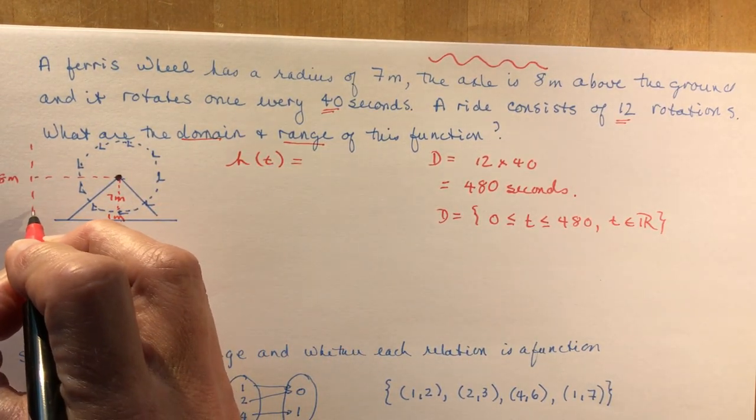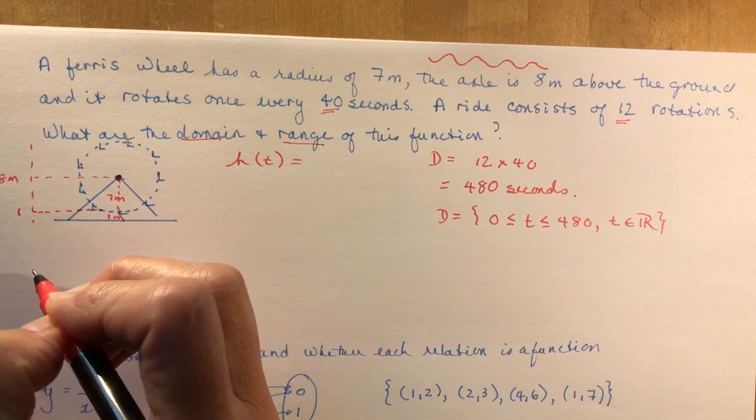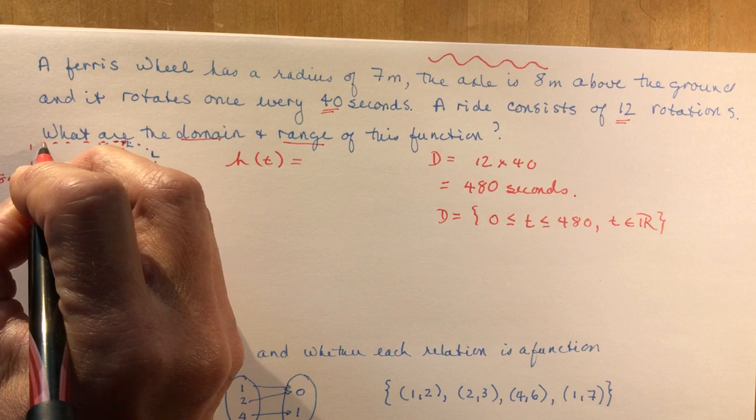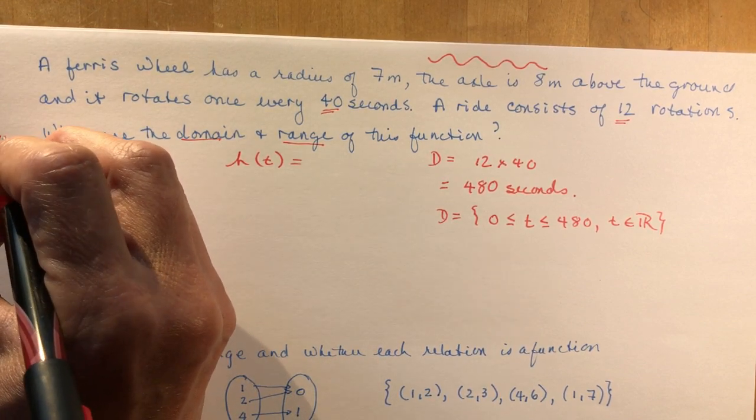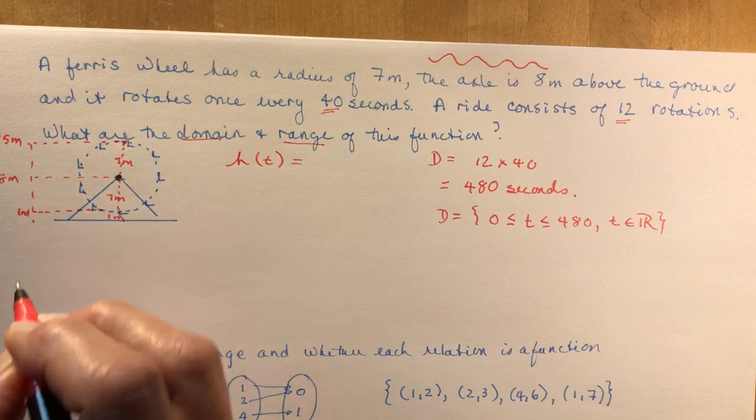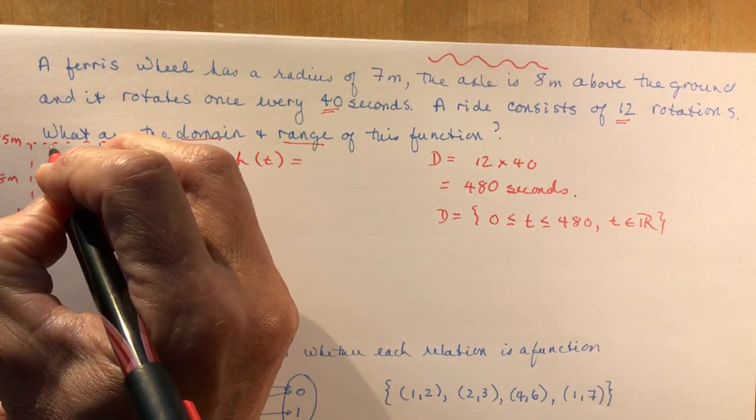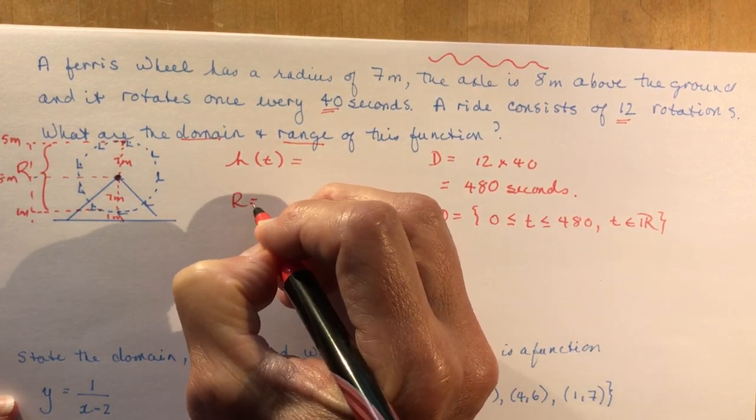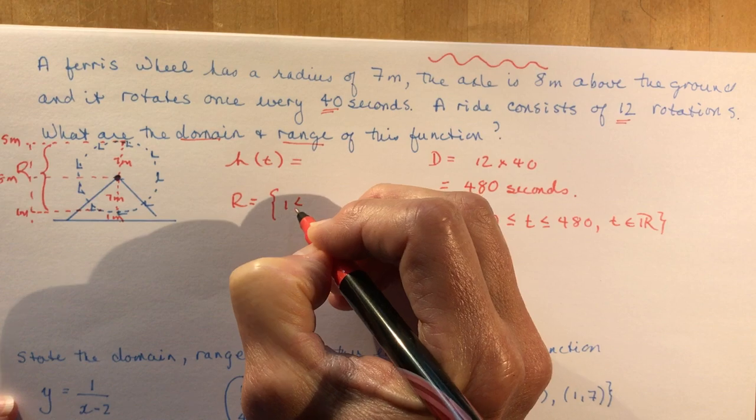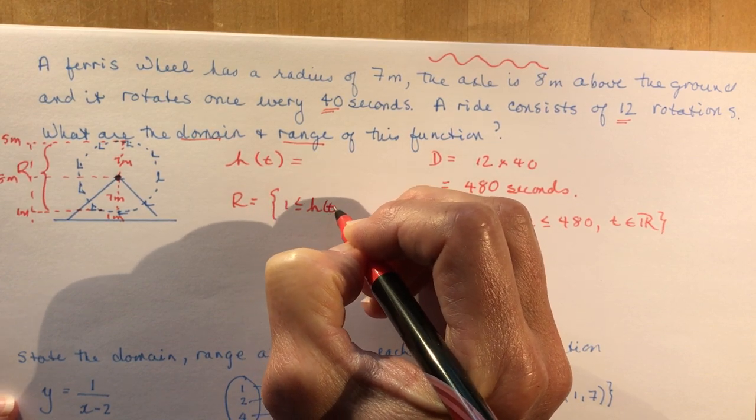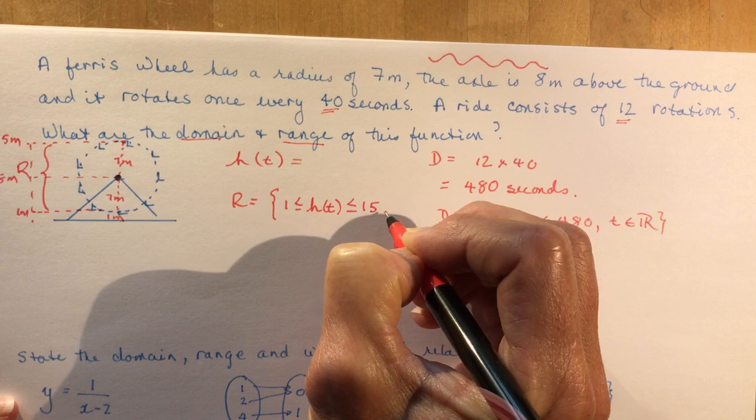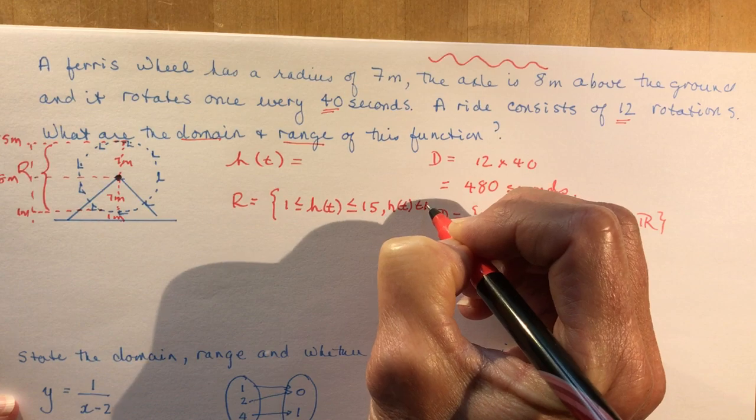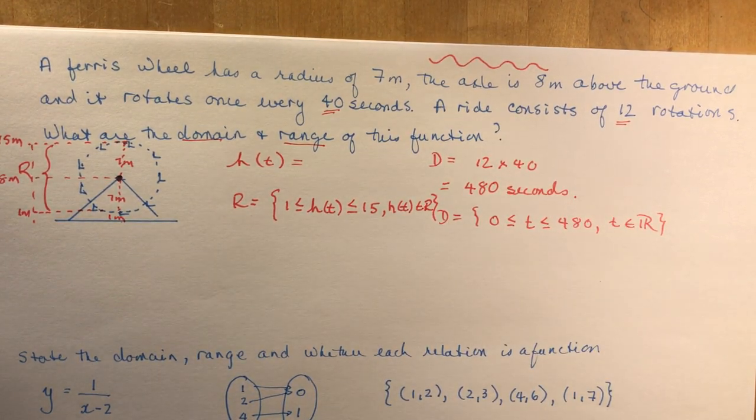So the range here is going from here, which is one meter. And then I'm going to add seven more meters up here to get to the height, the top height of my ferris wheel. And that would be eight plus seven or 15 meters. So this is my range, from here to here. That's my range. So the range is going to be between one and the height, we'll call it height at time T, and it goes up to 15. And it is also an element of real numbers.